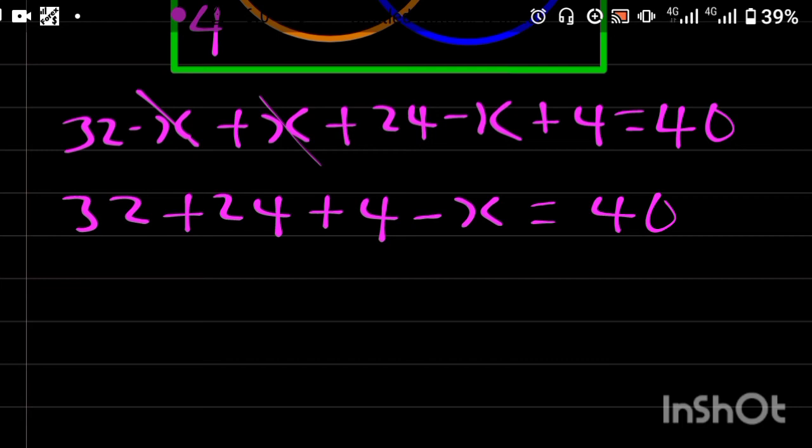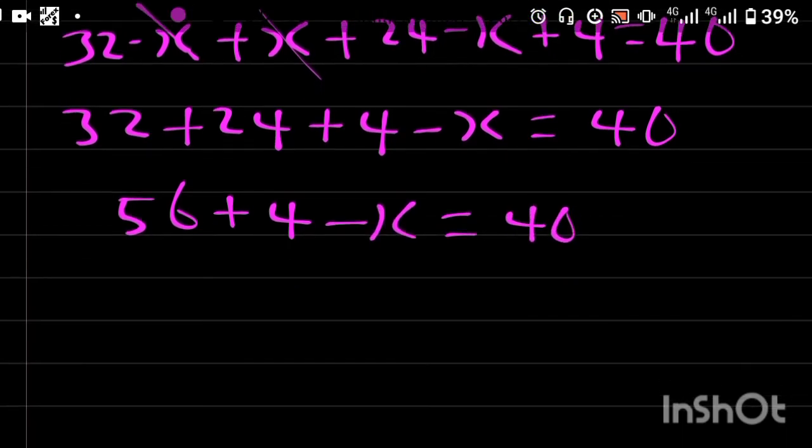32 plus 24 is going to be 56 plus 4 minus X is equal to 40. 56 plus 4, that is going to be 60 minus X is equal to 40.